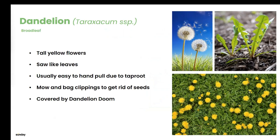We did have a question from someone battling dandelions because their neighbor isn't pulling them, so they're getting a lot of seeds from there. Best thing to do — you can't change other people's habits — but as long as you're either pulling the flowers or mowing and bagging clippings often, that should keep them under control along with spraying them with Dandelion Doom when they're young. They're usually pretty easy to hand pull. They have a long taproot, so I wait until after rain or after watering a few hours previously, then pull them — it's much easier to get them out of the soil.